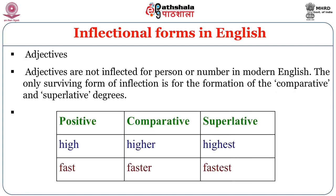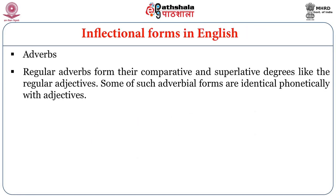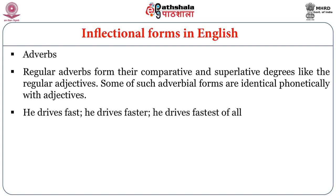Adjectives are not inflected for person or number in modern English. The only surviving inflection is for the comparative and superlative degrees: 'high,' 'higher,' 'highest'; 'fast,' 'faster,' 'fastest.' Regular adverbs form their comparative and superlative degrees like regular adjectives, and some adverbial forms are identical phonetically with adjectives — for example: 'He drives fast,' 'He drives faster,' 'He drives fastest of all.'